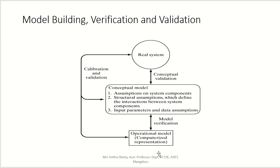The second step in model building is construction of the conceptual model — a collection of assumptions on the components and structure of the system, plus hypotheses on the values of the model input parameters. The third step is translation to the operational model in a computer-recognizable form — converting the conceptual model into a programming language. When that output is compared with the conceptual model, it is verification; when compared with the real system, it is calibration and validation.